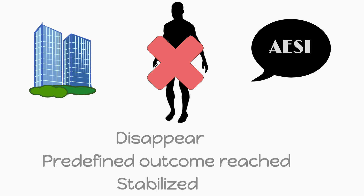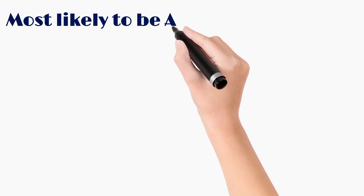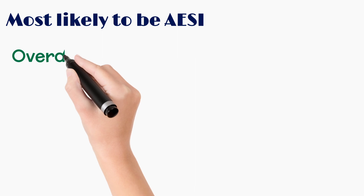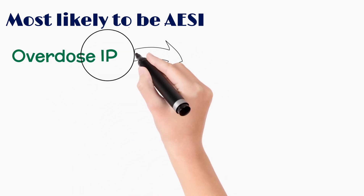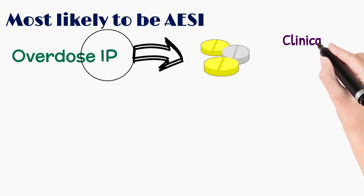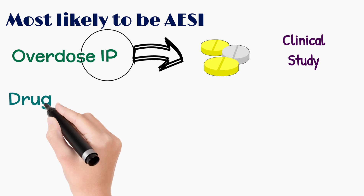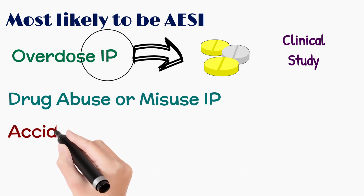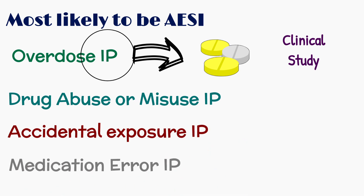Now let's discuss a few common events which are most likely to be included in the adverse events of special interest list of any clinical study protocol. The first event is overdose of an investigational product — the investigational product is the study drug for which the clinical study is conducted. Another event is suspected drug abuse or drug misuse of the investigational product. Then, accidental exposure to the investigational product. Next is any medication error involving the investigational product.